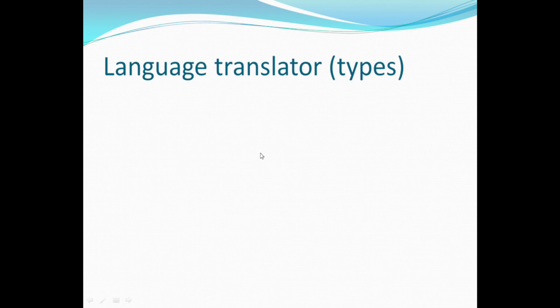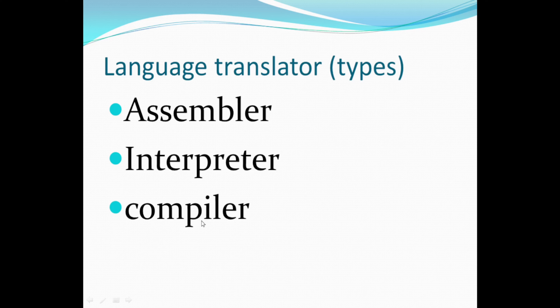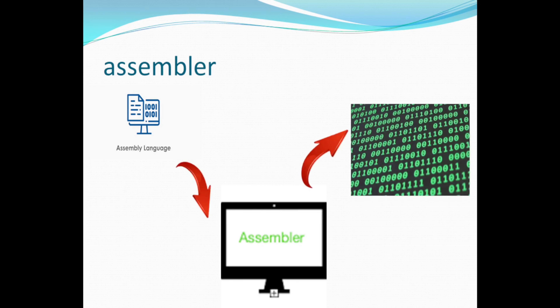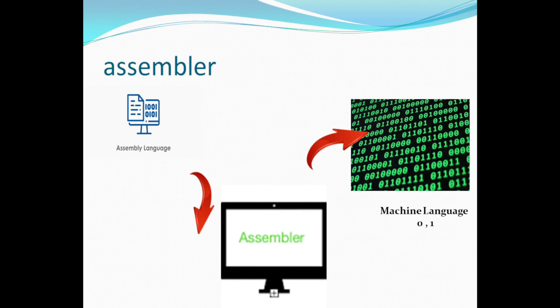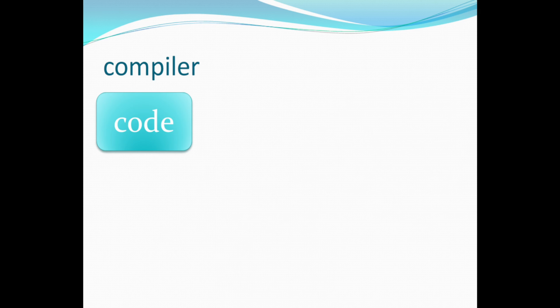The next topic is the types of translators. We have three types: assembler, interpreter, and compiler. We will discuss them one by one. First, assembler — it translates assembly language into machine language. This conversion is done by the assembler, which is one type of programming language.